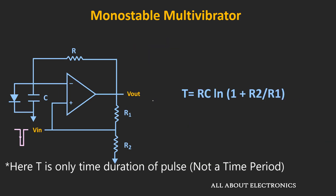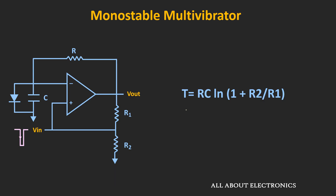The time period t depends upon the values of R, C, R1, and R2. For this circuit, the time period t is given by the expression: t = RC × ln(1 + R2/R1).